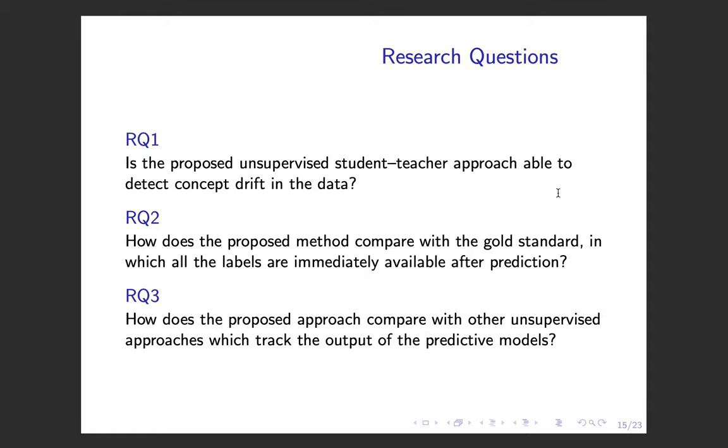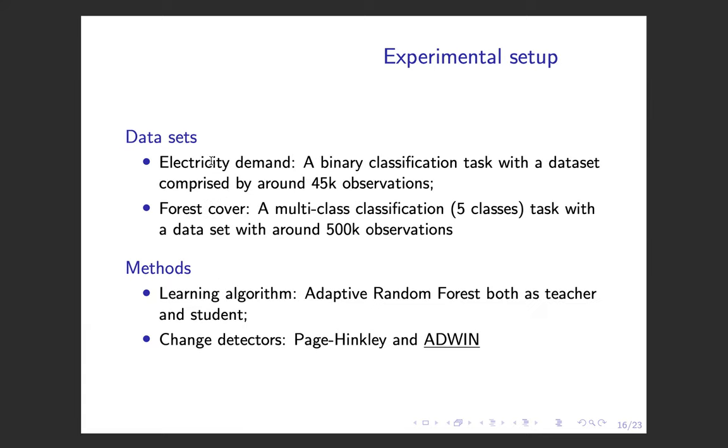We carried out experiments to validate our proposal. First, we wanted to check whether the proposed approach is able to detect concept drift. Then we compared it to a gold standard, in which we assumed that labels are available immediately after prediction. We assumed this approach is not feasible in practice, but is still a good benchmark. We also compared the proposed approach with other unsupervised methods. We used two datasets: one about electricity demand and another regarding forest cover type, which are benchmark datasets in data stream mining.